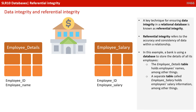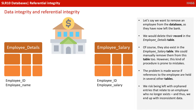In this example, a bank is using a database to store the details of its employees. The Employee Details table on the left holds the employee's name, among other things. A separate table, called Employee Salary on the right, holds the employee's salary information, amongst other things. If we want to remove an employee from the database who has now left the bank, we would delete their record in the Employee Details table. Of course, they also exist in the Employee Salary table. We could manually remove them from there too; however, this kind of procedure is prone to mistakes. The problem is made worse if references to the employee are held in several other tables, as we risk being left with orphaned entries that relate to an employee who no longer exists, and thus we start to end up with inconsistent data.